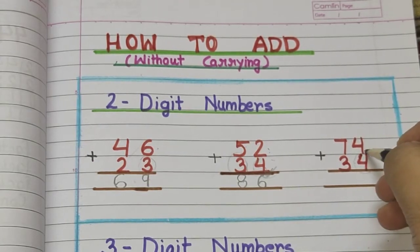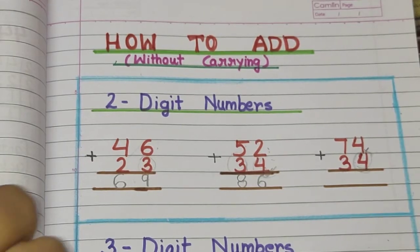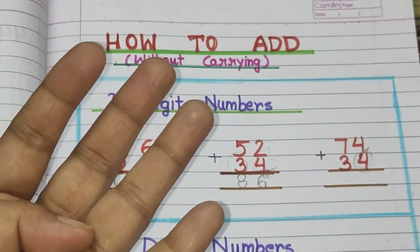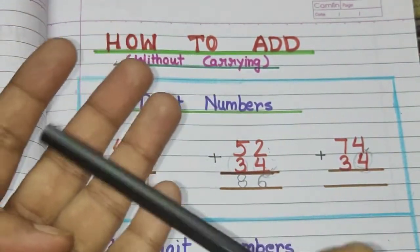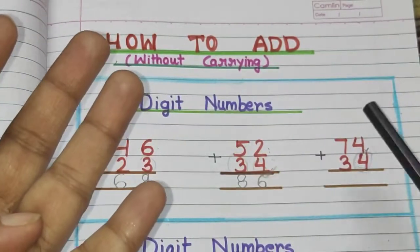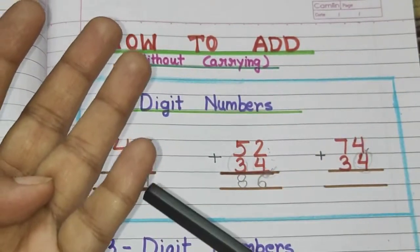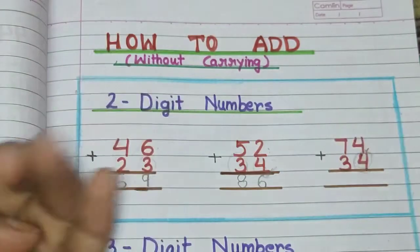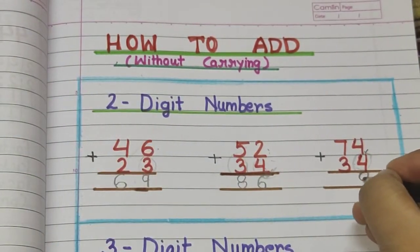Next: upar to four hai, but hume niche wale number ko dekh ke fingers nikaalne hai — four fingers. Count karlo: one, two, three, four. Four ke baad: five, six, seven, eight. So it is eight.